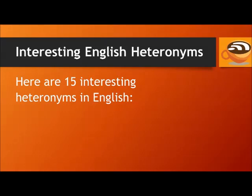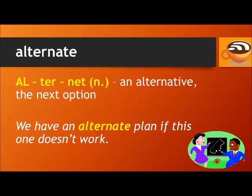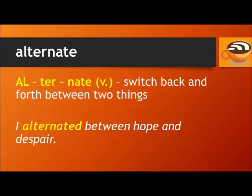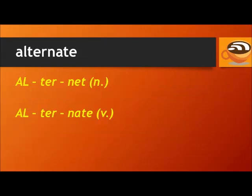Today I'm going to teach you 15 interesting heteronyms in the English language. The first one is 'alternate' and 'alternate.' 'Alternate' means an alternative, the next option. For example: we have an alternate plan if this one doesn't work. 'Alternate' as a verb means to switch back and forth between two things. For example: I alternated between hope and despair. Alternate. Alternate.